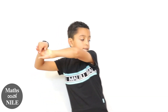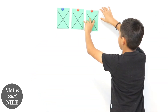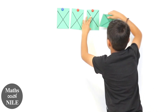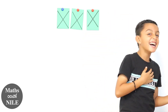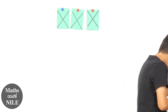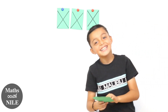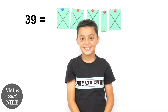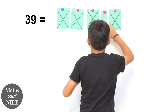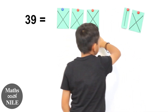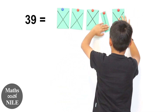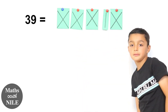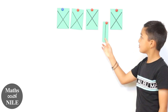Now it starts getting interesting - let's do 39, can you do that one on the board for me? Okay, that makes sense. Can you point the 30 out for us? So the 30 is this. And now add the 9 in - you add it together, 30 plus 9 equals 39. Okay, very good.